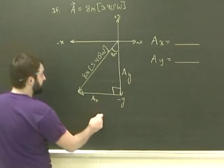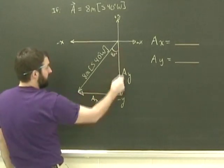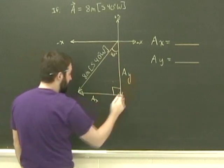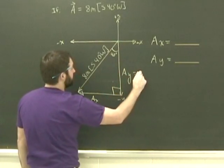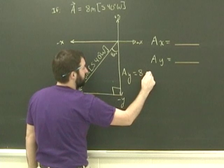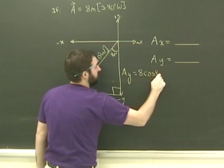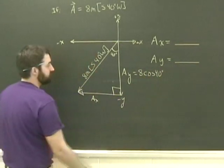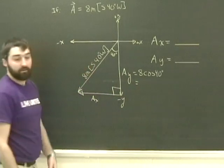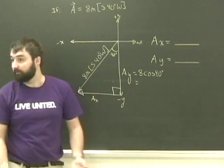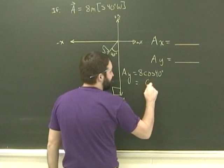So same thing as before now, y is on the adjacent side, so Ay will be equal to 8 cos 40 degrees. 8 cos 40 degrees is 6.1 meters.